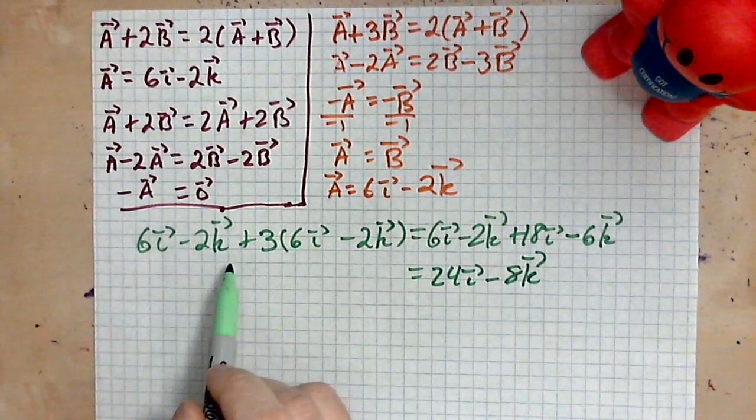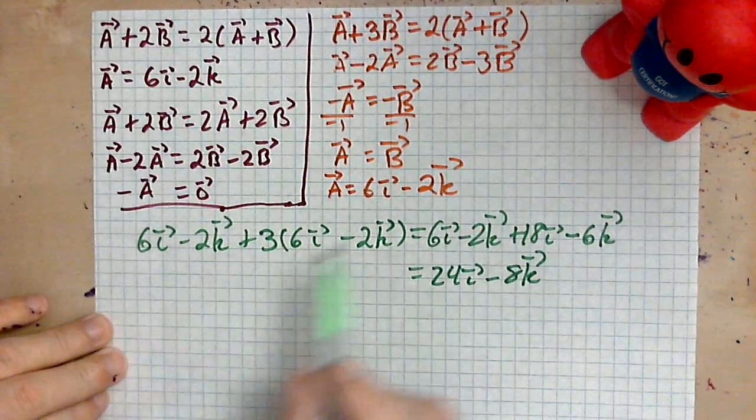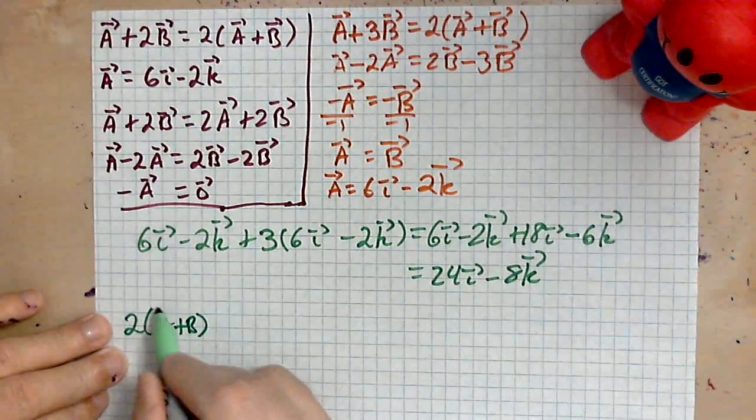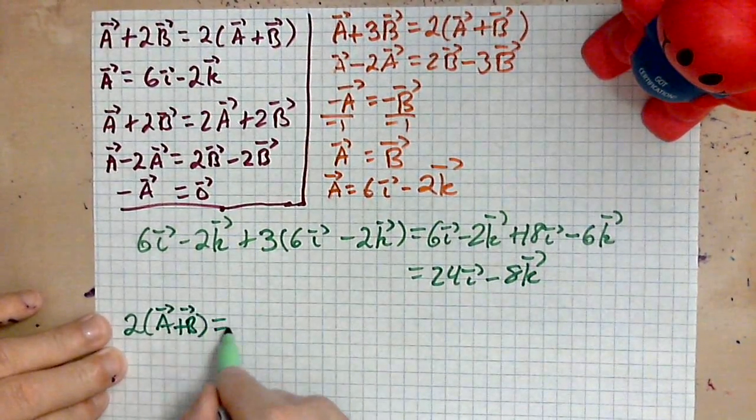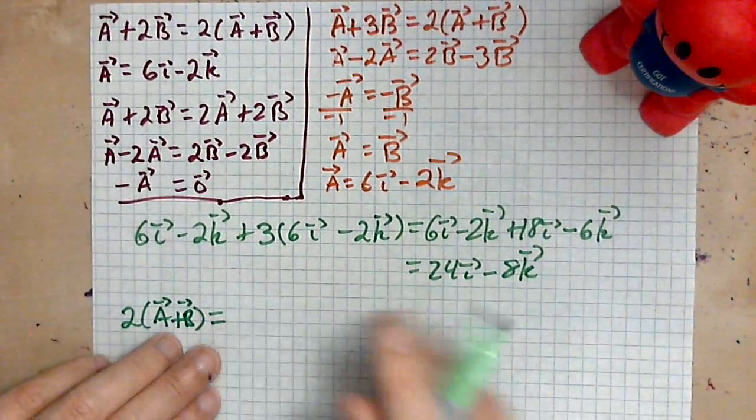So the left side simplified is 24i minus 8k. And now we have to show that 2 times (a plus b) gives the same vector once we simplify it. That's what we have to check.